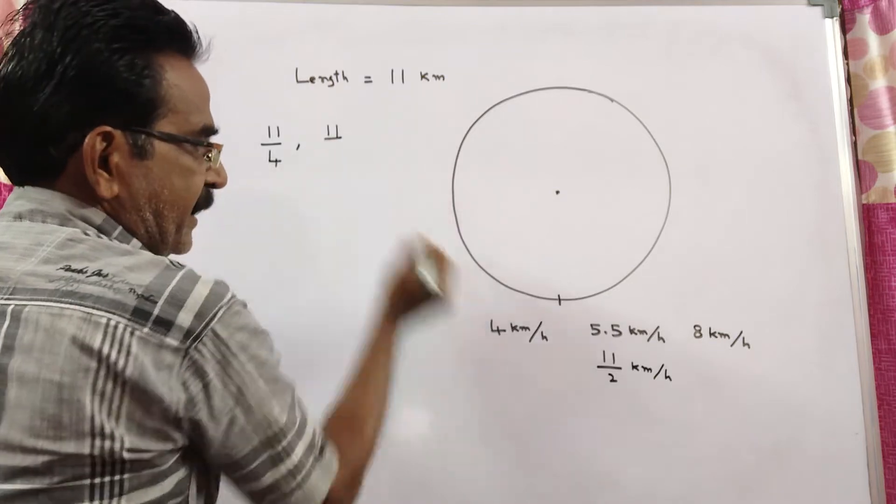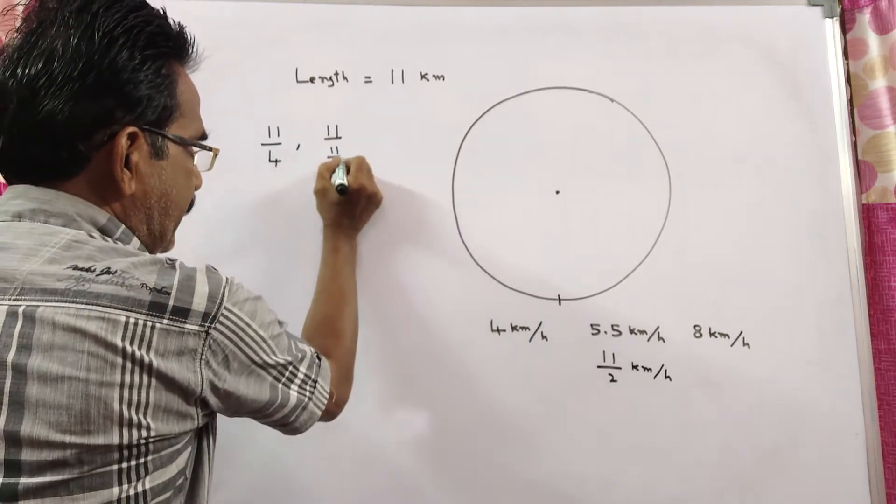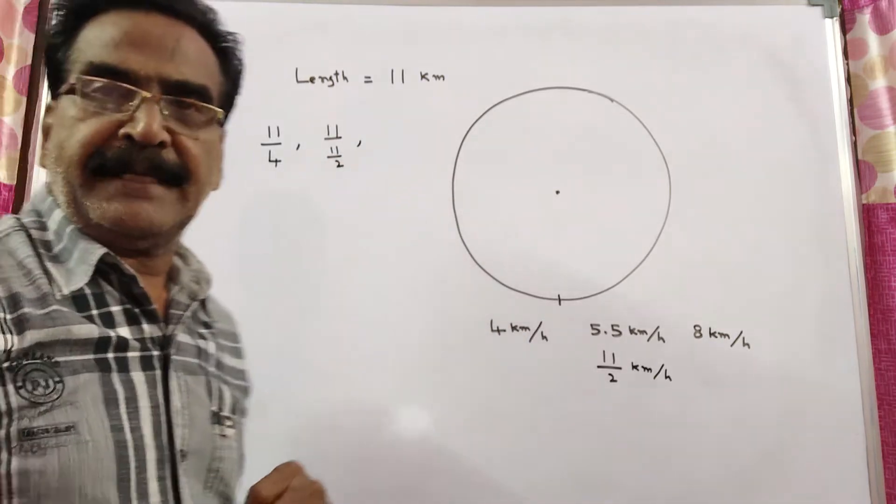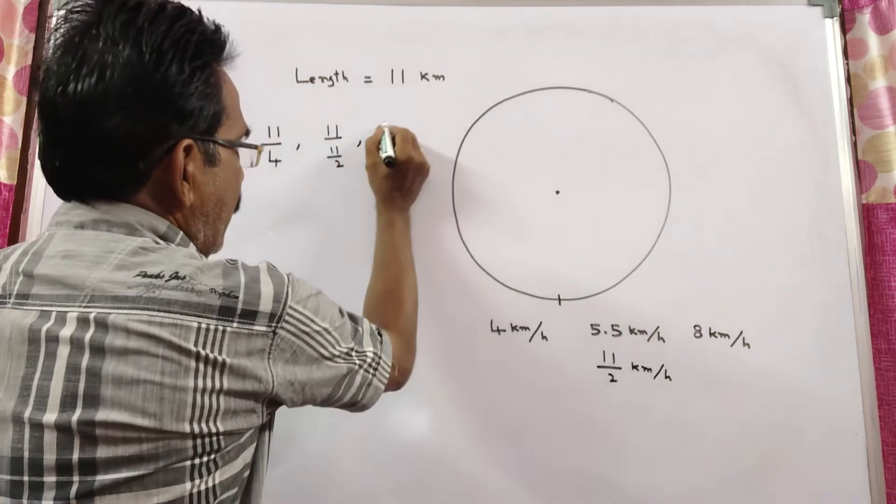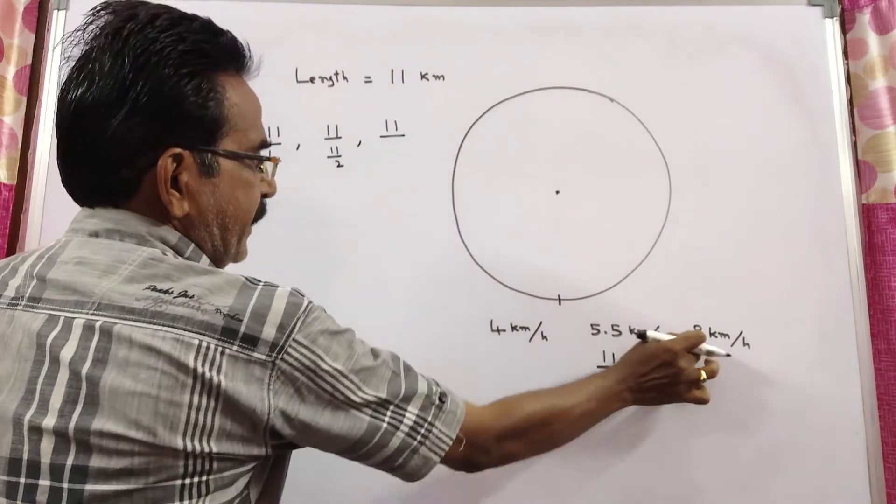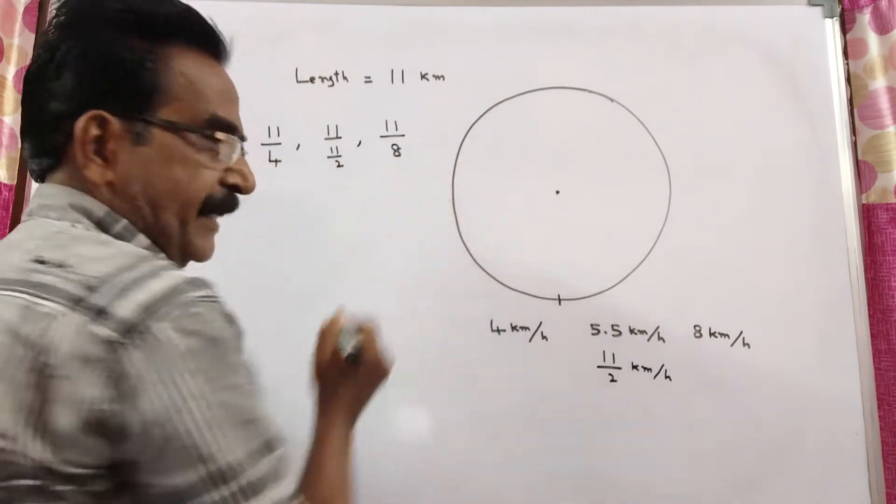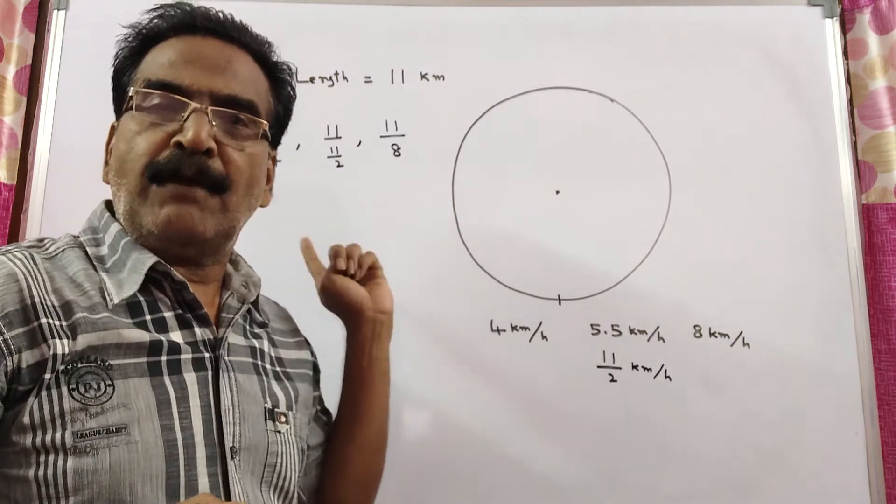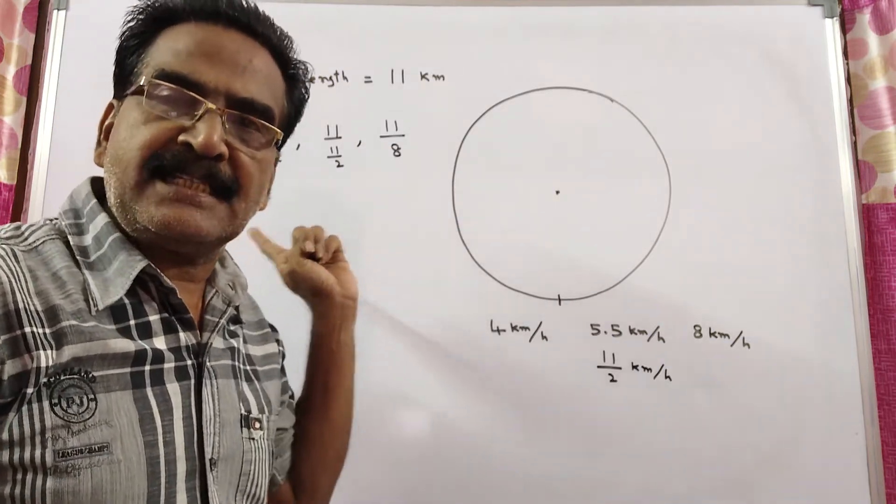The second man's time is 11/(11/2), which equals 2 hours. The third man's time is 11/8 hours. We have to find the LCM of these three fractions.